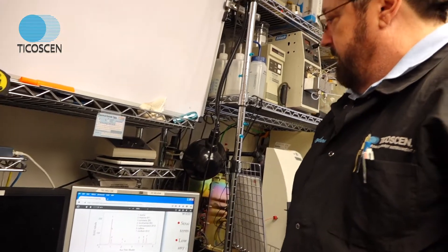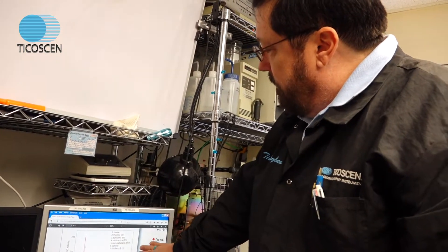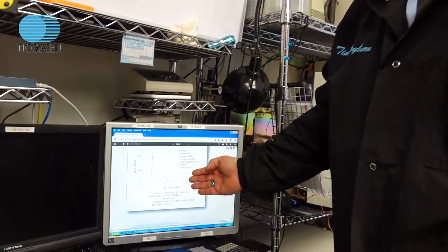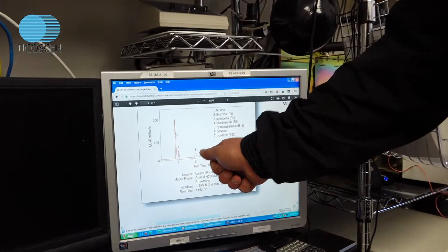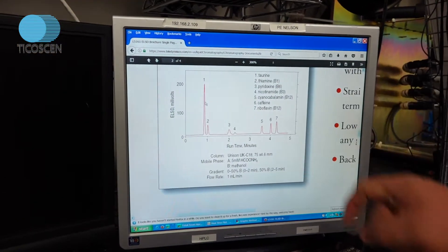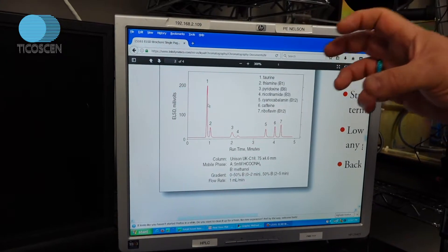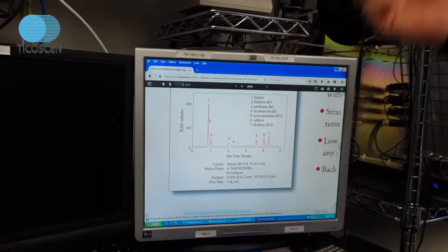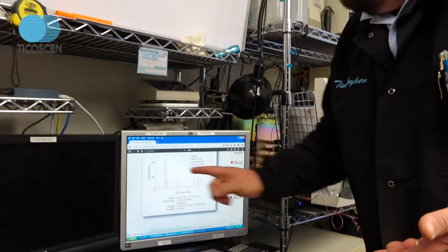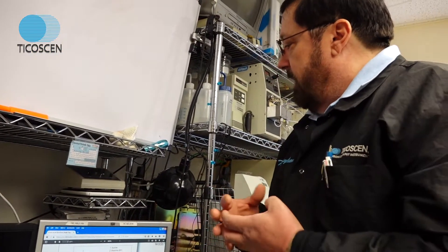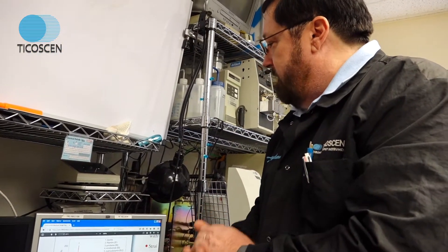That's the beauty of ELSD is you get a mass proportional response. Whereas on a UV detector, peak number four may be huge and peak one may be small. It won't actually reflect the percentage mixture of the compound because peak number three is highly chromophoric and absorbs a lot of light even though it's a minor mass.